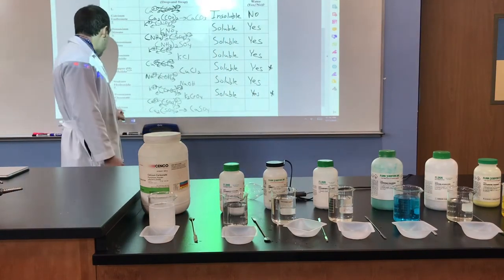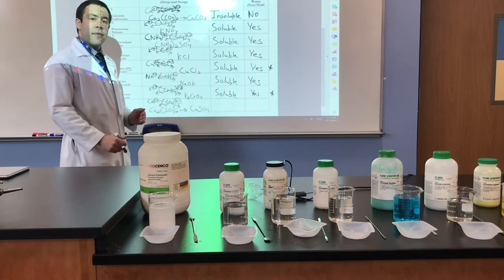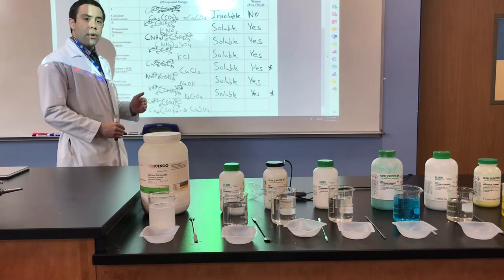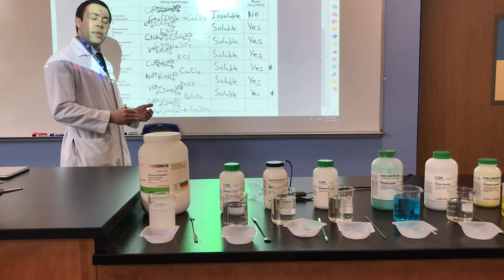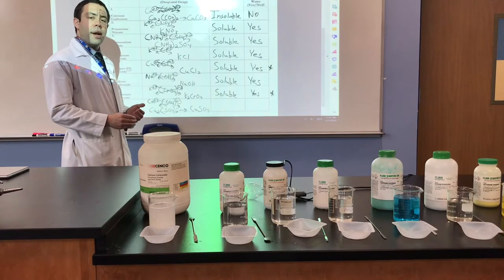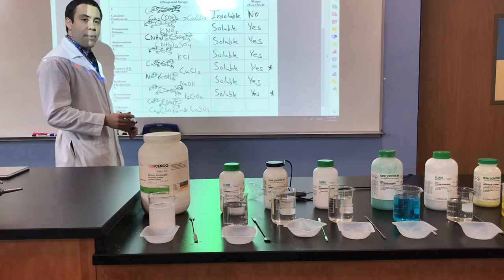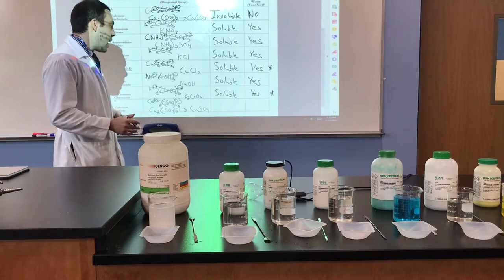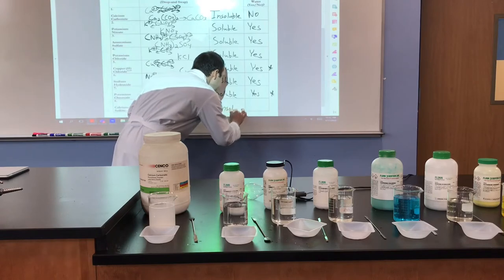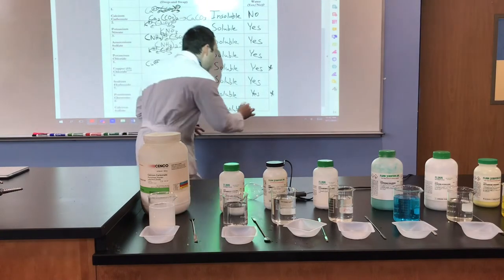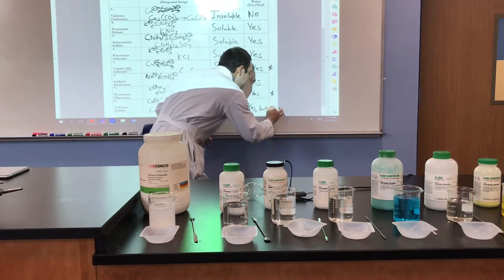Finally, with calcium sulfate — while sulfate is on the left side of Table F, meaning it is soluble, it does have five exceptions. The five exceptions are when sulfate is with silver, calcium, strontium, barium, or lead. Since calcium is one of those exceptions, while sulfate is normally soluble, in this case it is insoluble. And here, you saw the light bulb go on, but dimly.